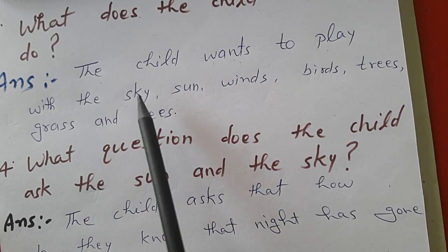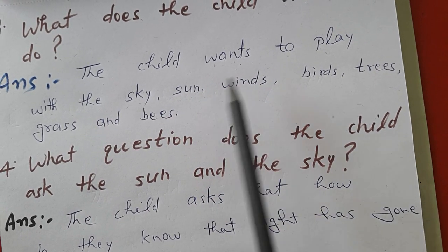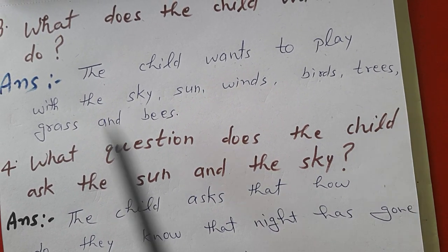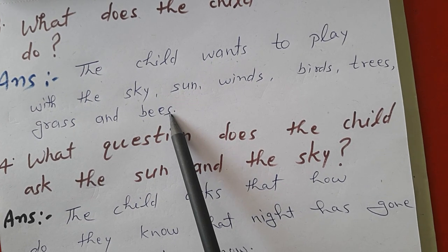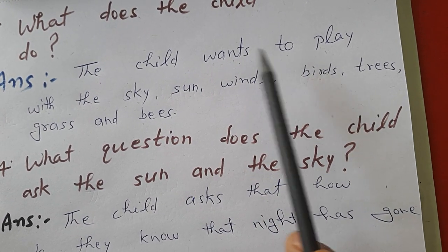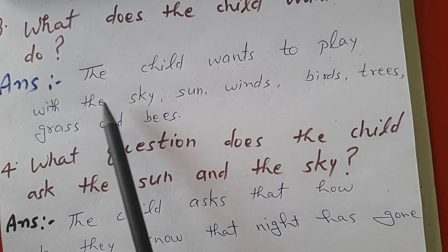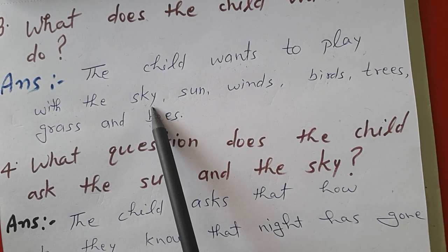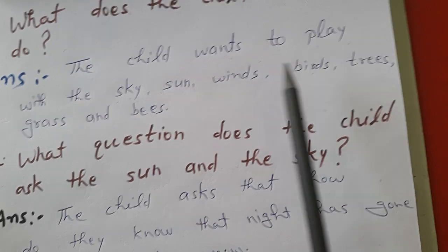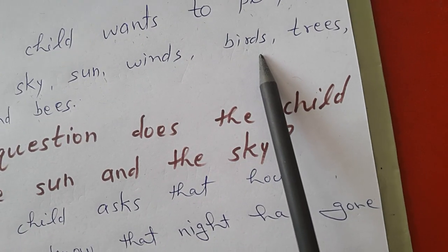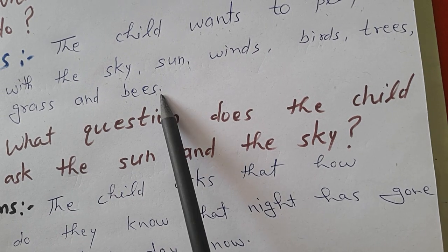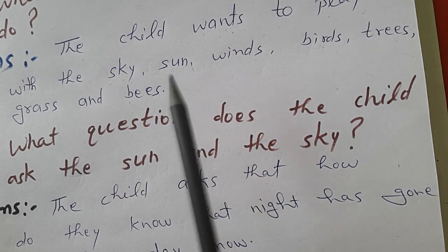The child wants to play with the sky, sun, winds, birds, trees, grass, and bees. Sky ke saath, sun ke saath, winds ke saath, birds ke saath, trees ke saath, grass ke saath, aur bees ke saath khailna chahata hai.